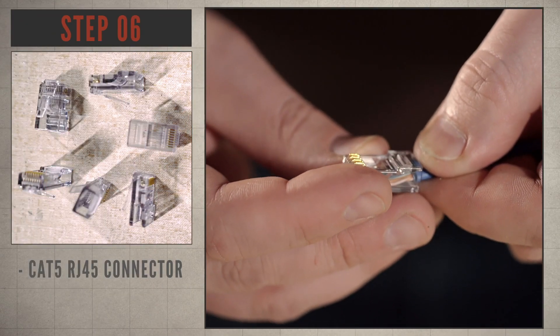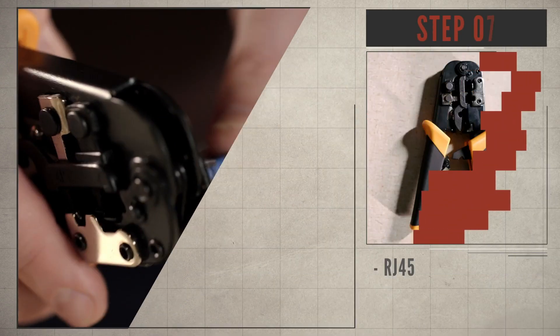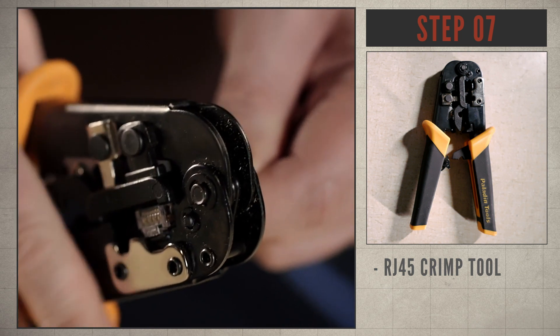Step 6, insert the RJ45 with the tab down. Step 7, we're going to use our crimper to finish the termination.